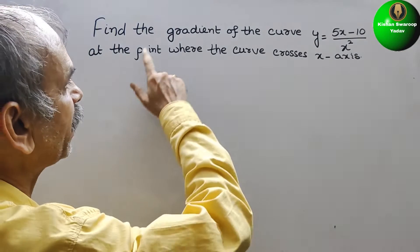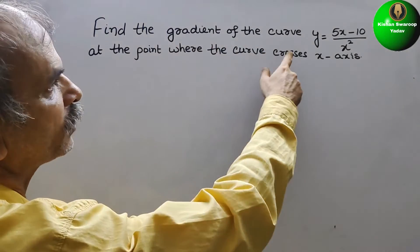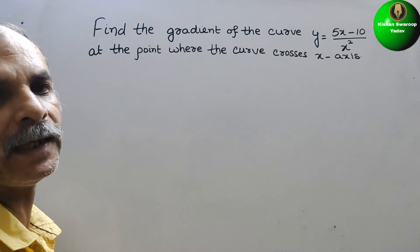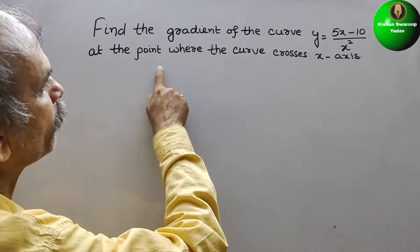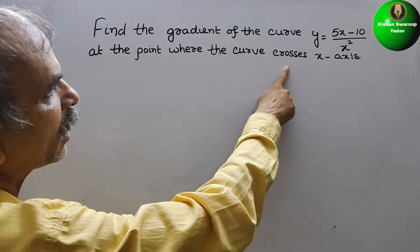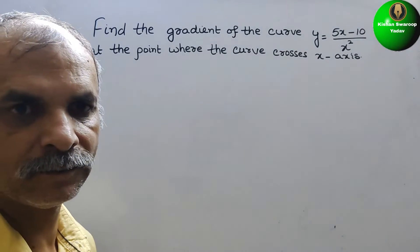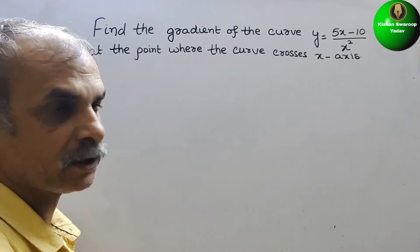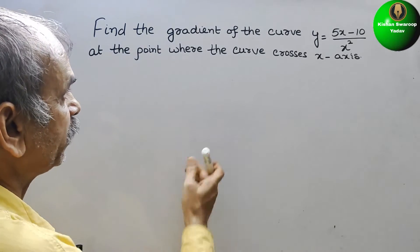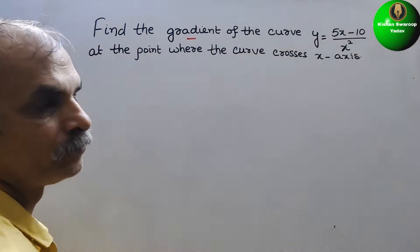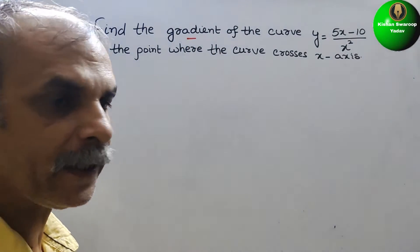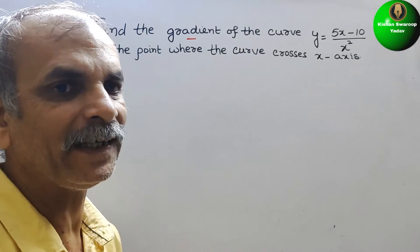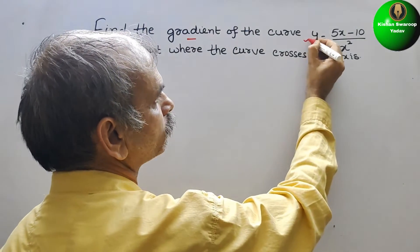Your question is: find the gradient of the curve y equals 5x minus 10 by x squared, at the point where the curve crosses the x-axis. Understand this — here they have told gradient. Gradient means we have to find dy by dx with the help of this.